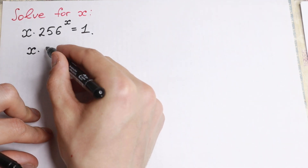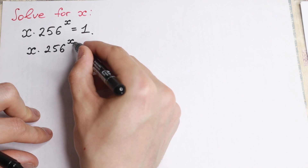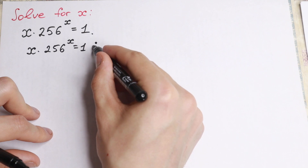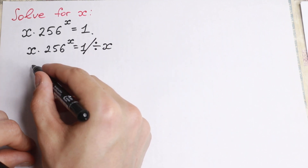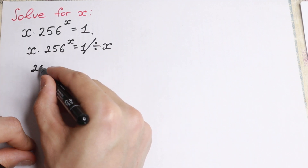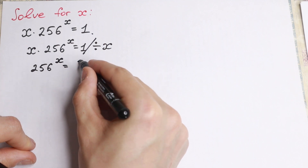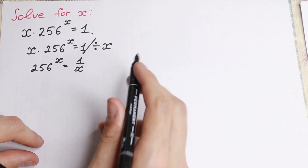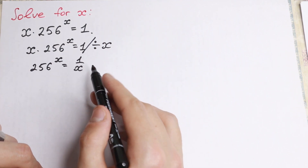If we write this equation x times 256^x equals 1, and we divide both parts by x, on the left-hand side this x will cancel and we will have 256 to the power x equal to 1 over x. So we just divide both parts by x, and I do this because I want to show you the best trick for solving this equation.